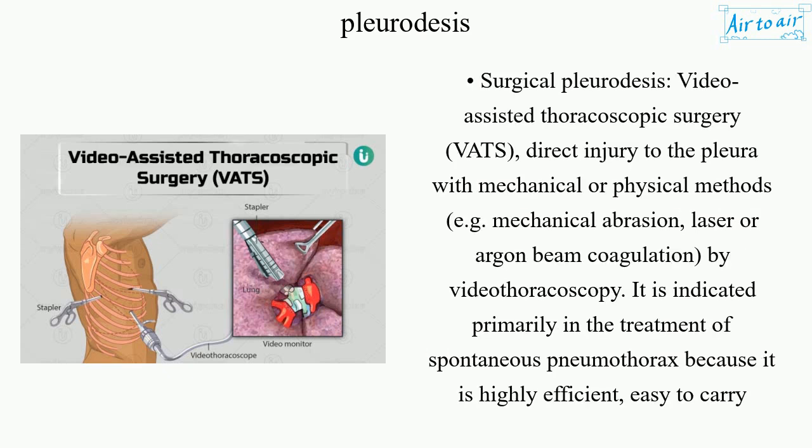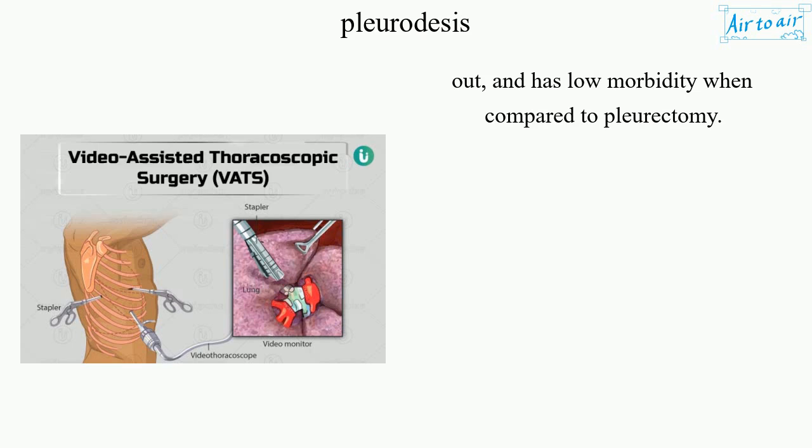Surgical pleurodesis: video-assisted thoracoscopic surgery (VATS) — direct injury to the pleura with mechanical or physical methods, e.g., mechanical abrasion, laser or argon beam coagulation, by videothoracoscopy. It is indicated primarily in the treatment of spontaneous pneumothorax because it is highly efficient, easy to carry out, and has low morbidity when compared to pleurectomy.